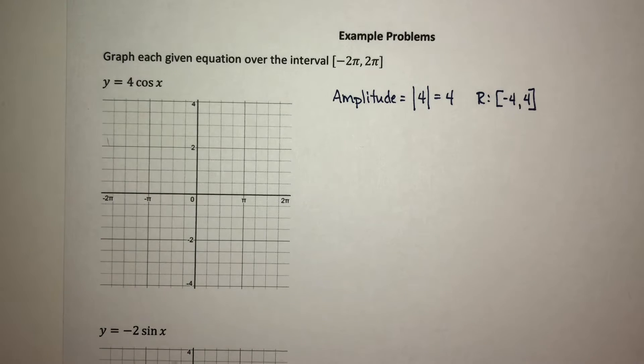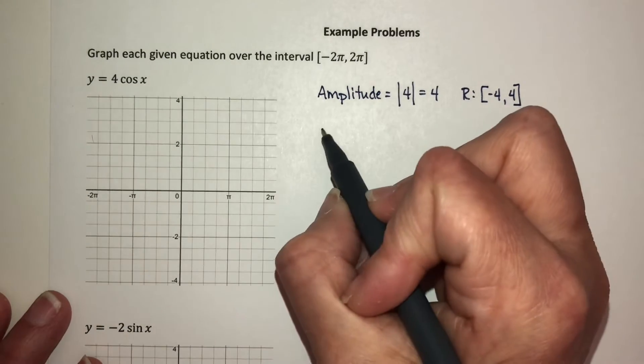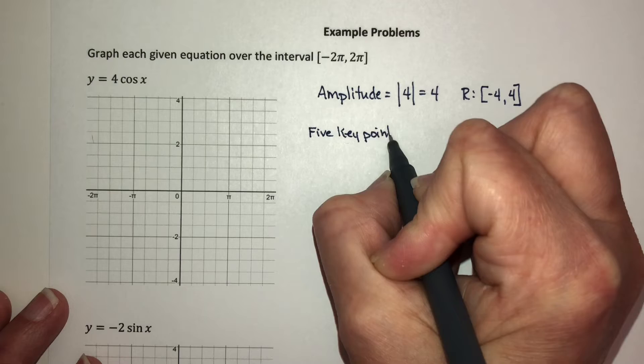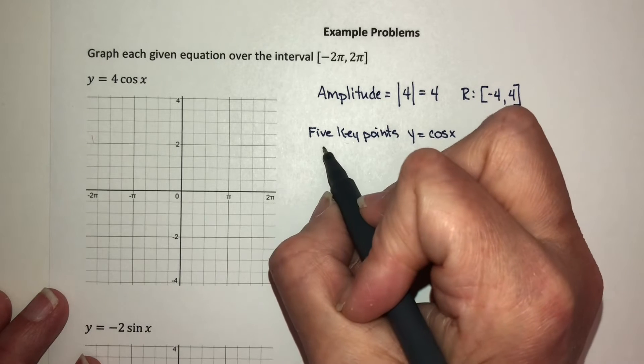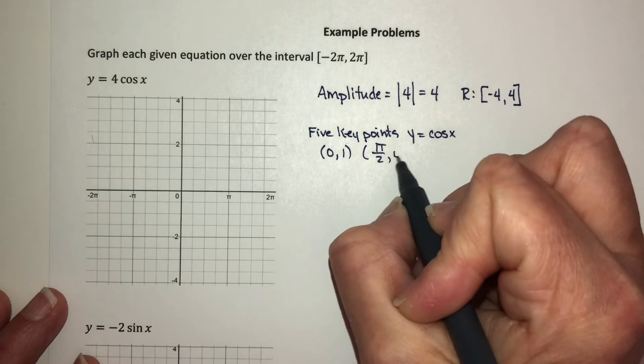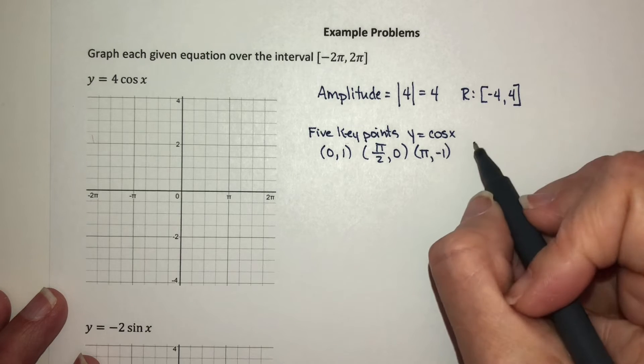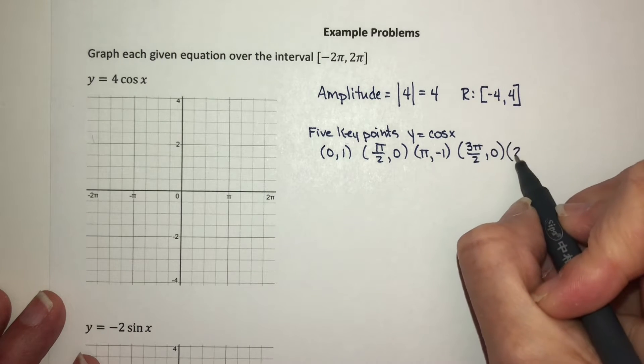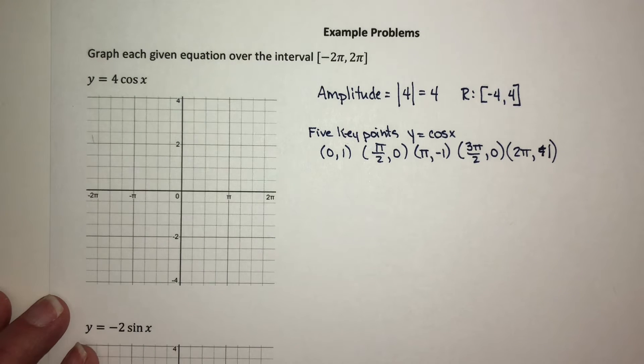Now, if we talk about the five key points for cosine, which we talked about earlier, those five key points for y = cos x, not the 4 in front, those points are (0,1), (π/2, 0), (π, -1), (3π/2, 0), and then (2π, 1).